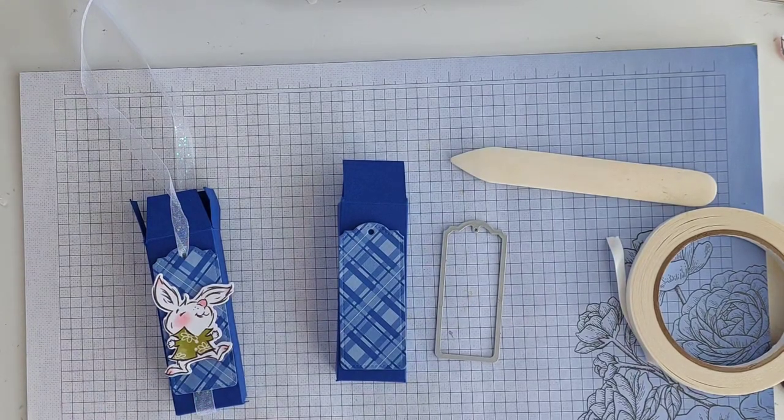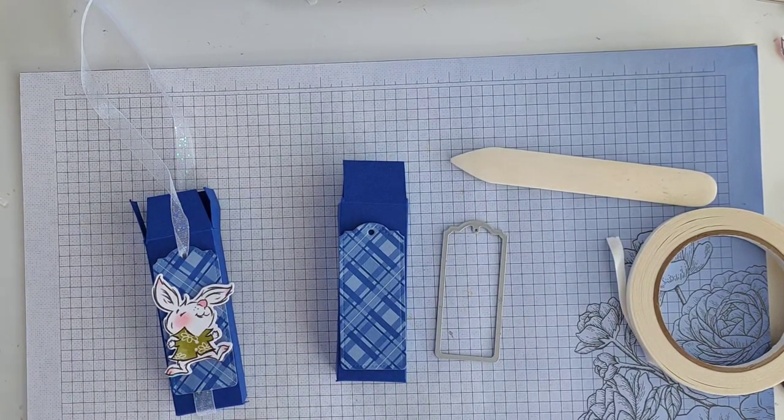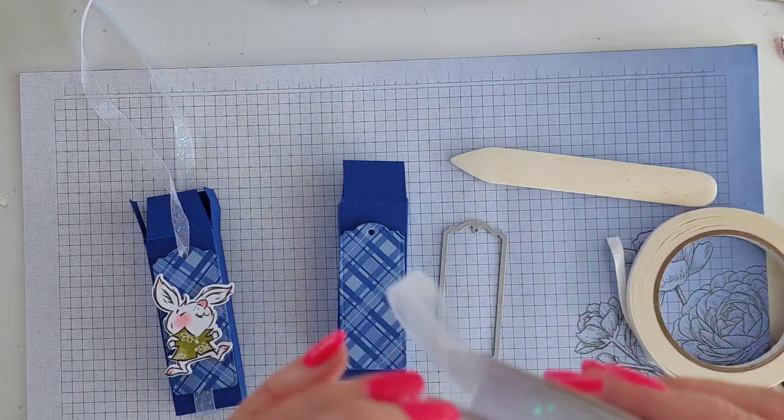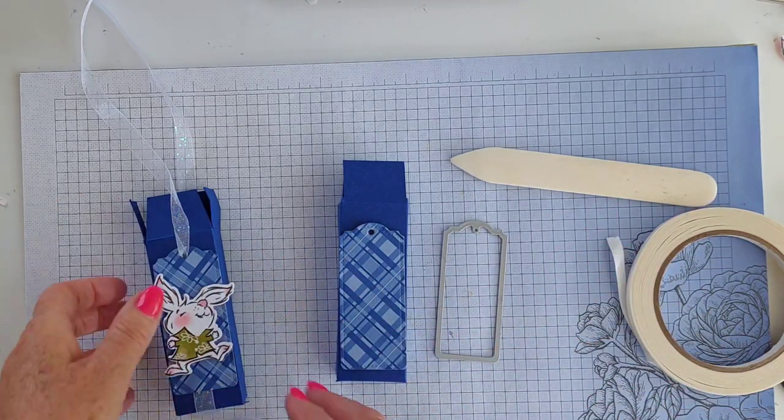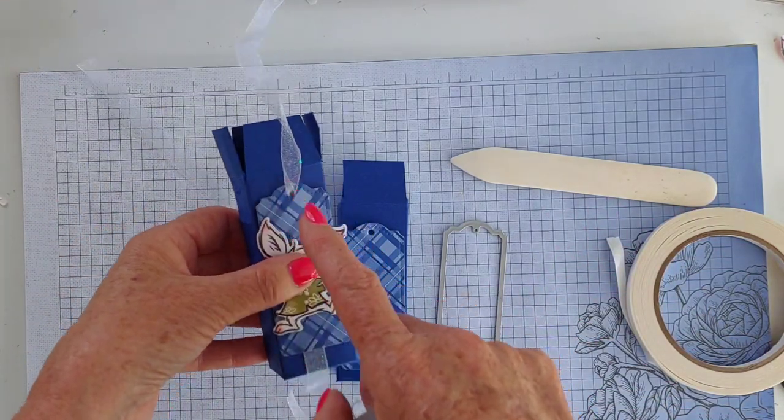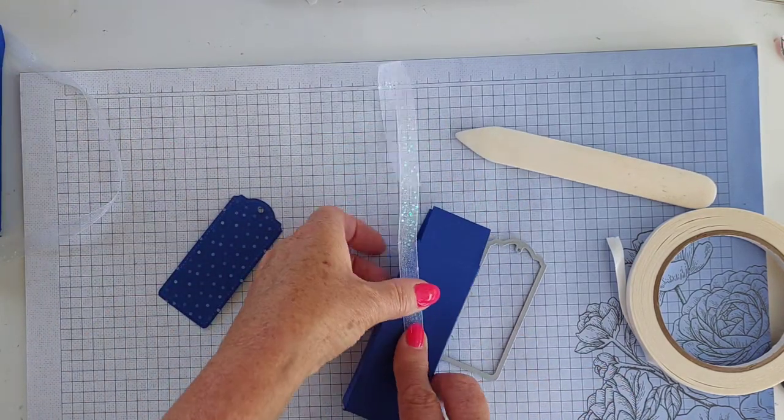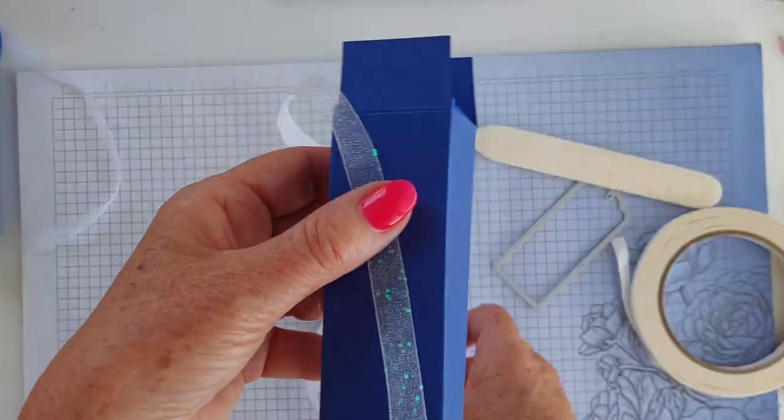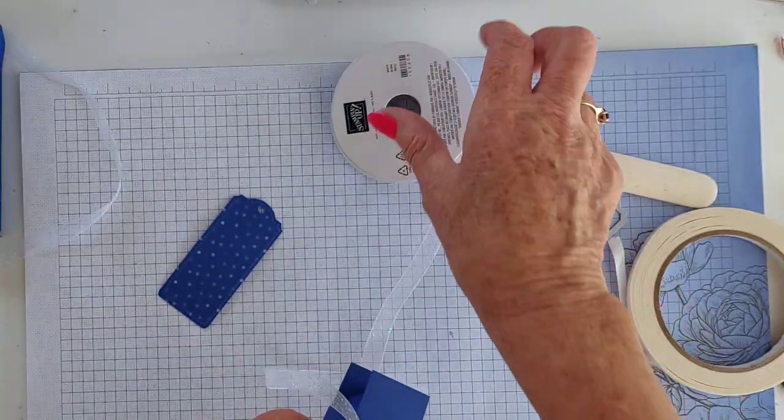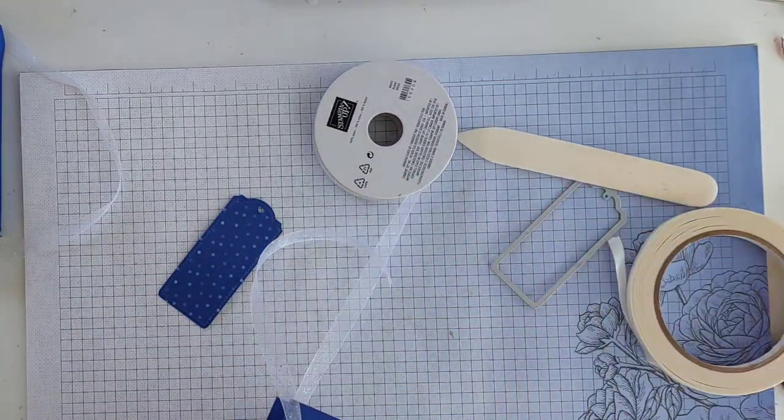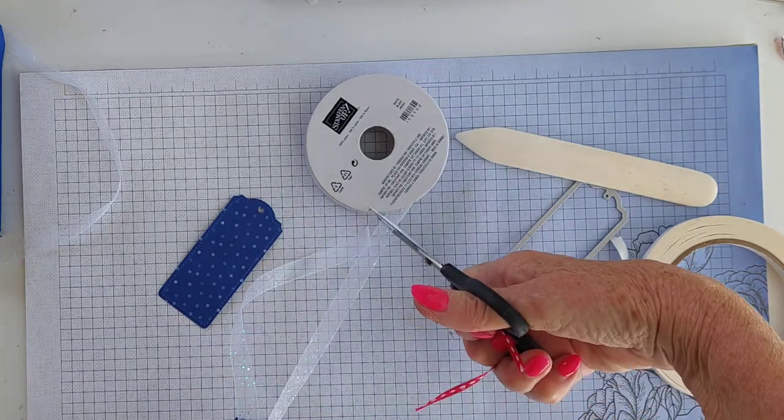because it brings out the little bits of color that's in here. I think it just adds a little bit to it. So I'm just going to measure a little bit of that, see how much we're going to need. Make a nice bow - that should be enough. And before I thread it through here, back of my tag.